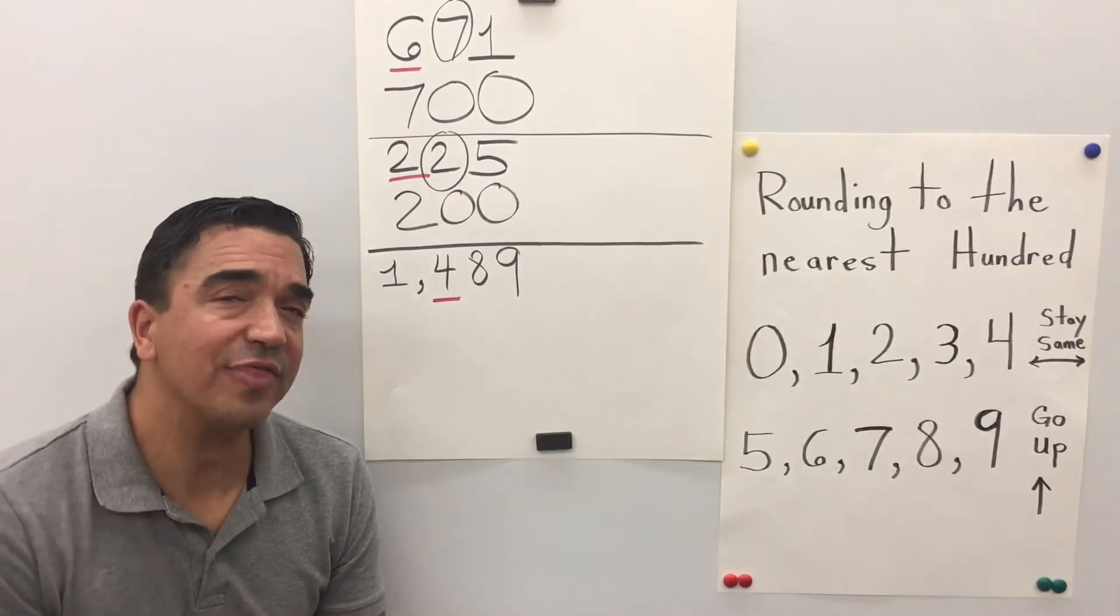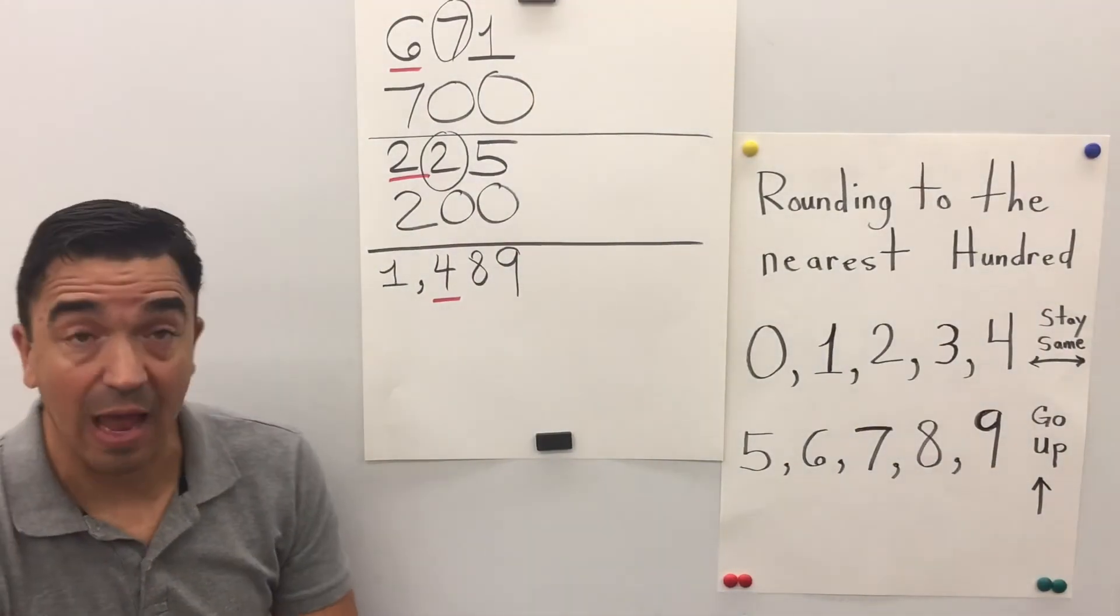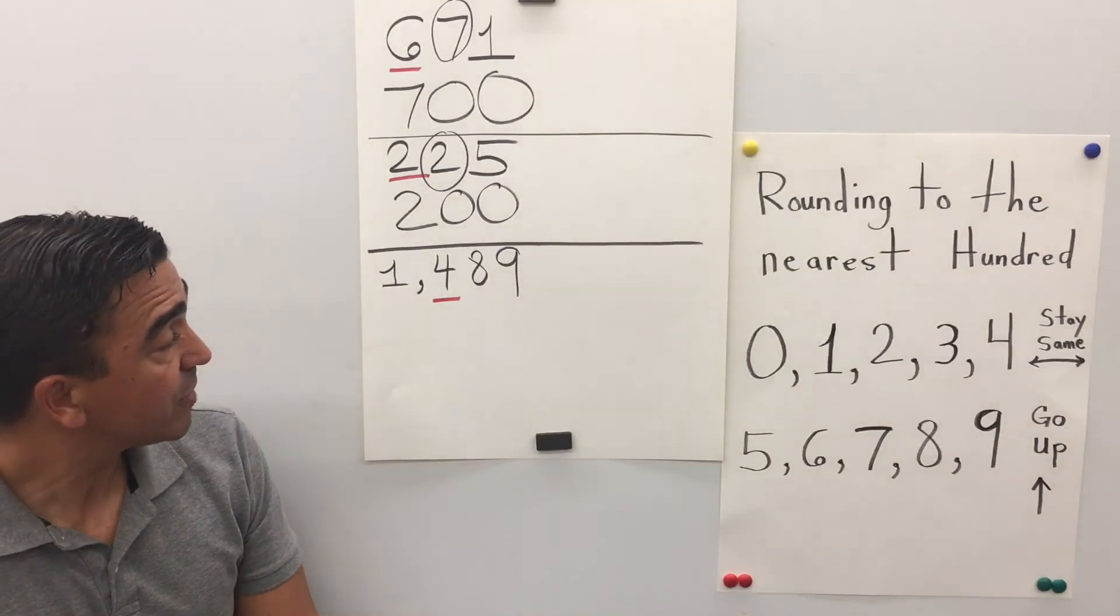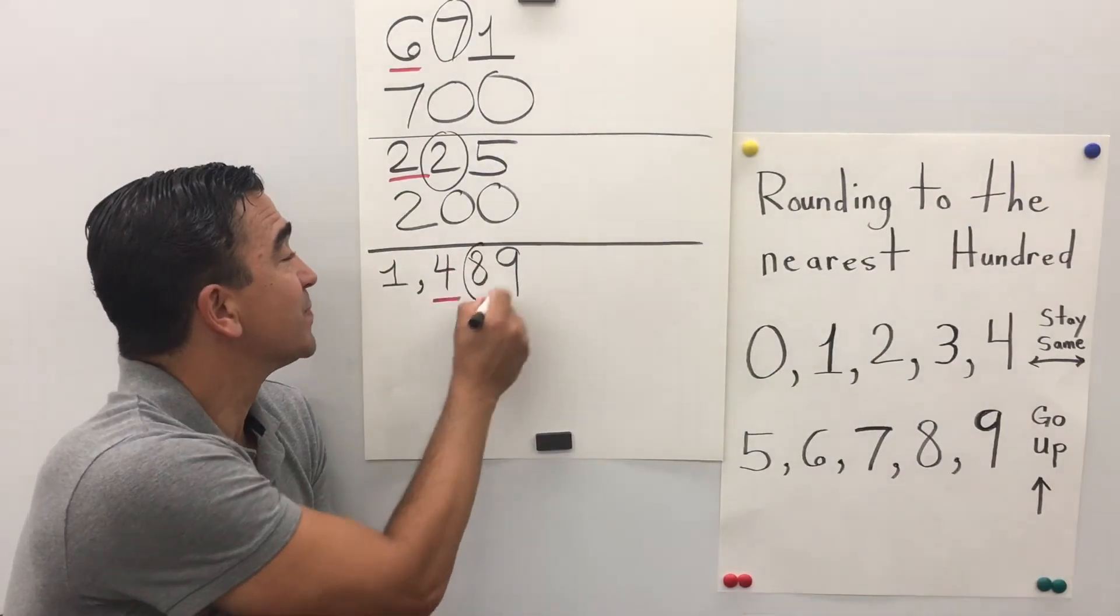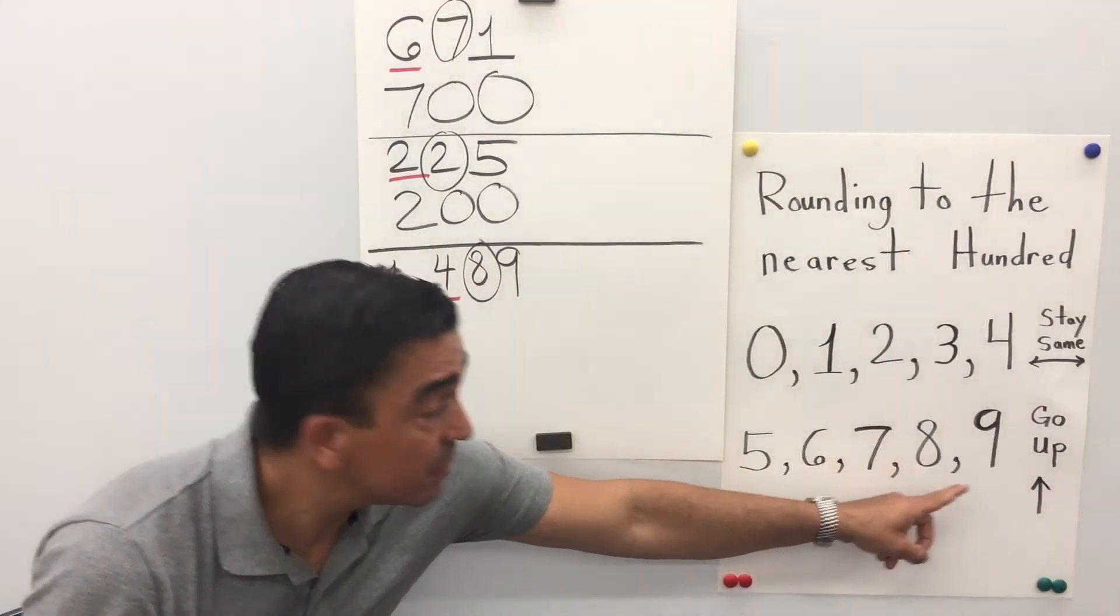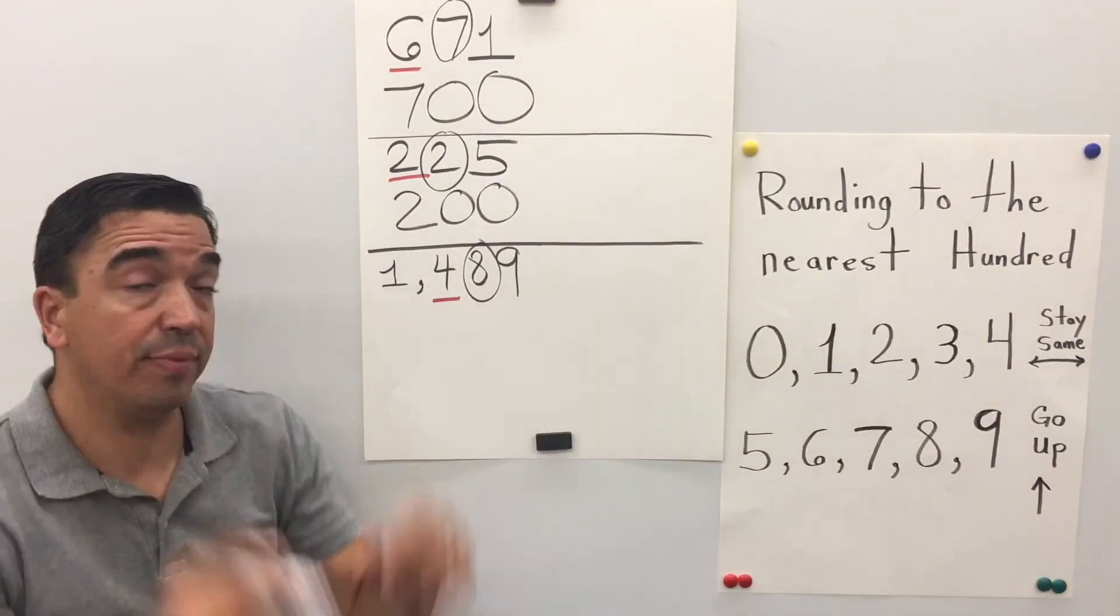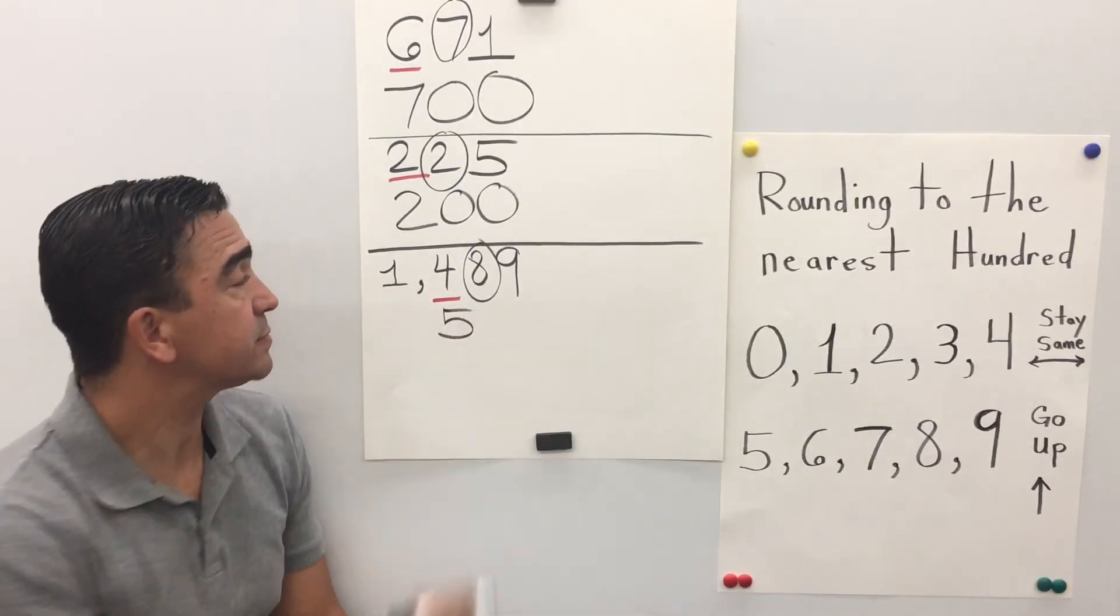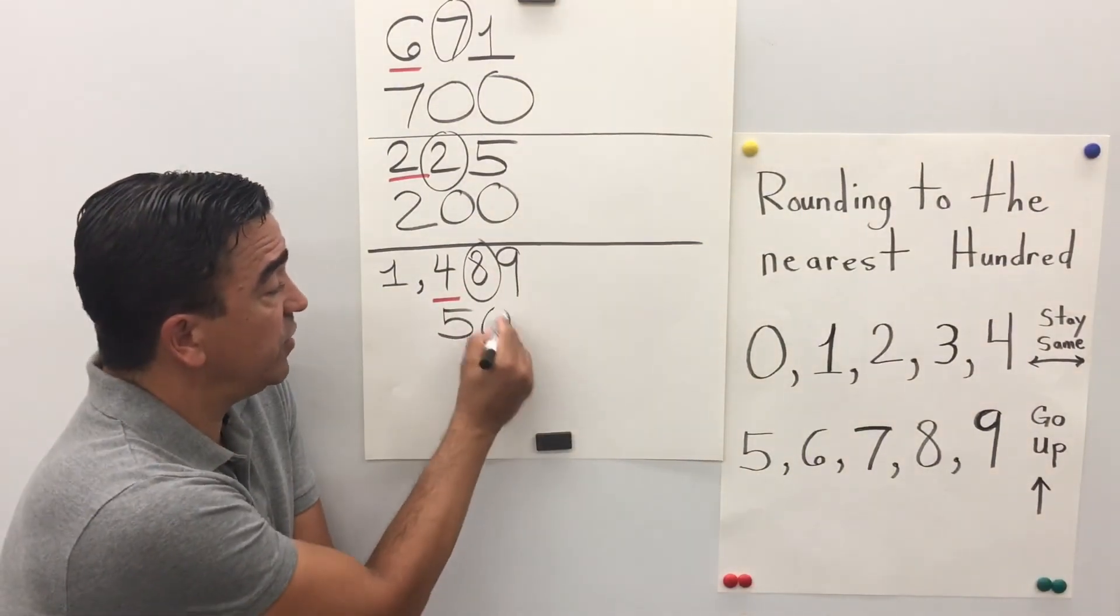Here's our last problem: 1,489. The 4 is in the hundreds place, so the 8 in the tens place is going to tell the 4 what to do. The 8 is going to tell the 4 to go up—it's going to become a 5. All the digits after become 0, and there's 2 digits, so 2 zeros.